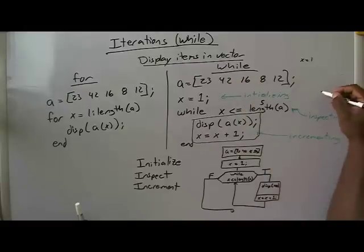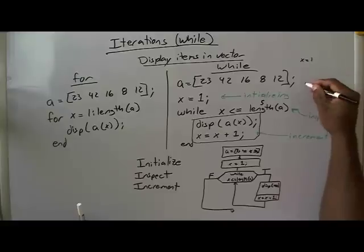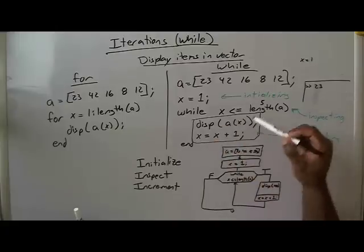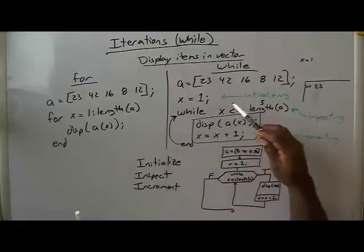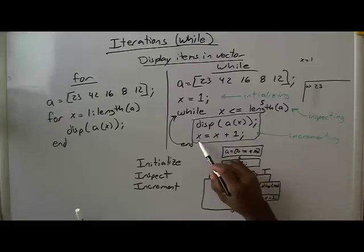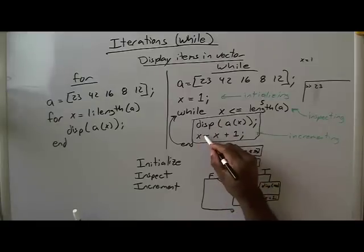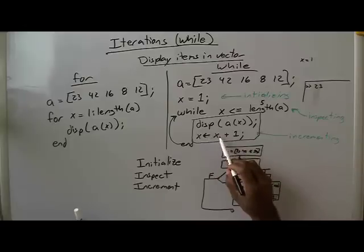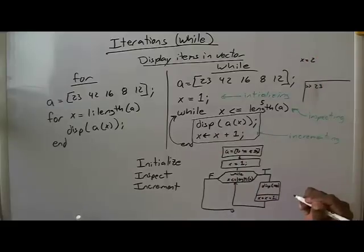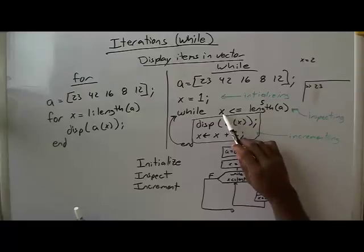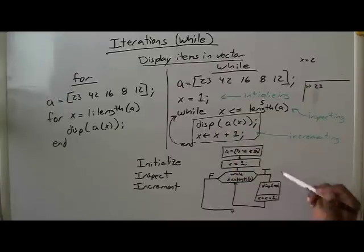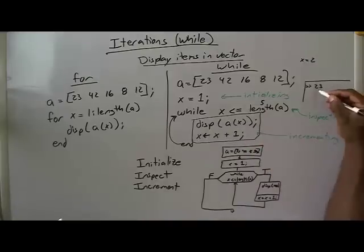We come back up to the top of the while loop. After displaying 23, we increment: x gets the old value of x, which is 1, plus 1 — now x equals 2. Is 2 less than or equal to 5? Yes, so we execute the code block again. We display A indexed at 2, which is 42. Then we increment again: x gets 2 plus 1, which is 3.